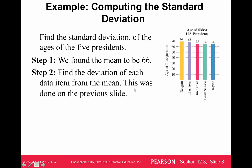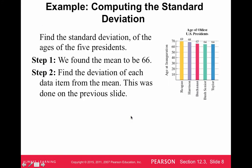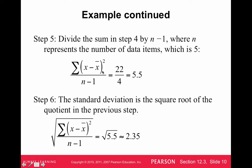Once we get the sum of the deviations, we take that and we divide by the number of data items minus one. So that's what they're showing here. We got the sum of 22. The number of data items was five. So five minus one is four, and 22 divided by four is 5.5. Then the last step is to take the square root of that result, and the square root of 5.5 is 2.35. So 2.35 we call the standard deviation of the data set.